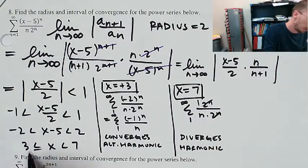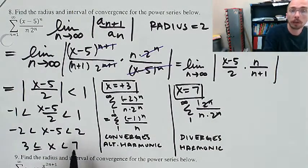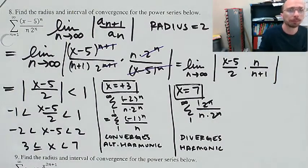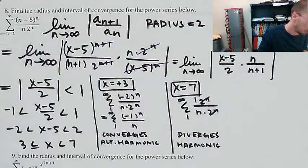So the interval of convergence is negative 3 to 7, including negative 3 but not including 7. That was the radius and interval of convergence for that power series.